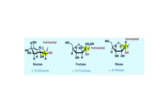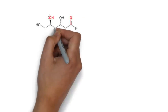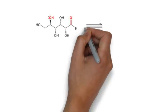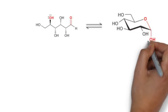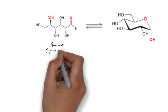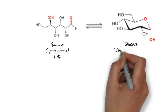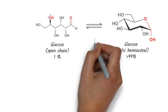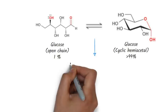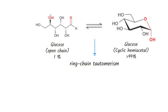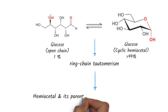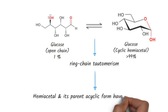Likewise, fructose and ribose, and many other sugars, are usually drawn as cyclic hemiacetals. In case of 5- and 6-membered hemiacetal rings, even if equilibrium strongly favors the cyclic hemiacetal, there will always be a small concentration in its linear acyclic form with the parent aldehyde or ketone. This type of tautomerism is called ring-chain tautomerism. This reversibility of hemiacetal formation in solution also means that, despite their appearances, cyclic hemiacetals have the same reactivity as the parent aldehyde or ketone, since the two forms are interchanging rapidly in solution.